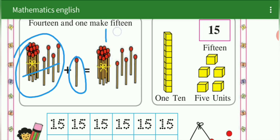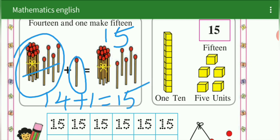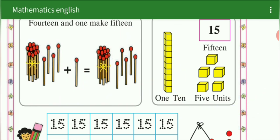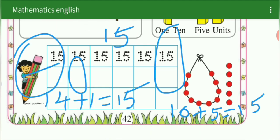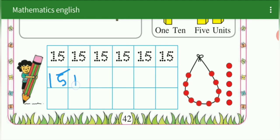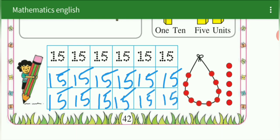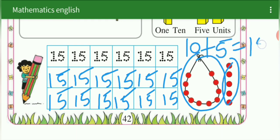14 plus 1 make 15. See here — 10 box, मतलब 10 unit, plus 5. 10 plus 5 is 15. Next we are going to write 15. This is for your homework — 15. 10 beads plus 5 beads, 10 plus 5 beads is equal to 15.